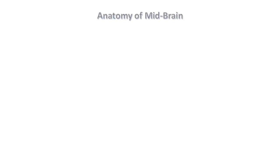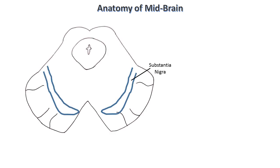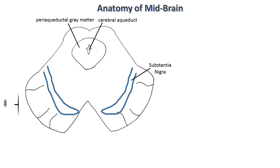Instead of directly going to syndromes, just understand a few important anatomical points of the midbrain. This is the cross section of the midbrain at the level of the superior colliculus. Here is the cerebral aqueduct. Surrounding it there is the periaqueductal grey matter. All structures in the brainstem are divided into basis, tegmentum, and tectum.